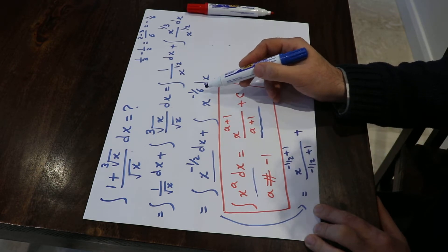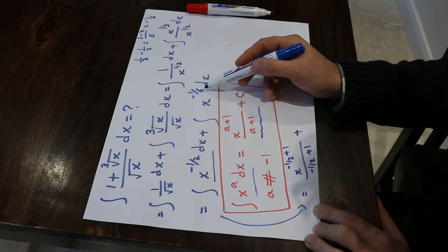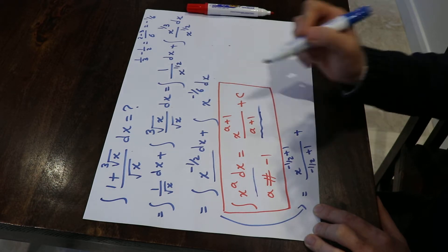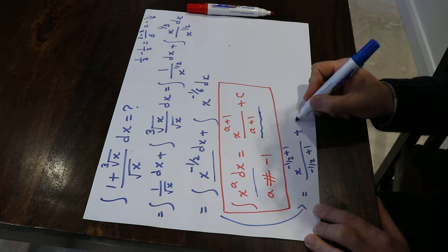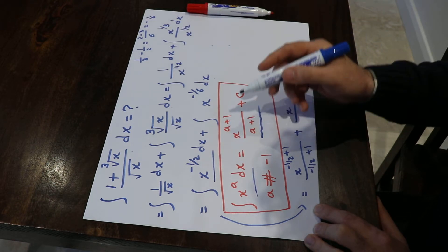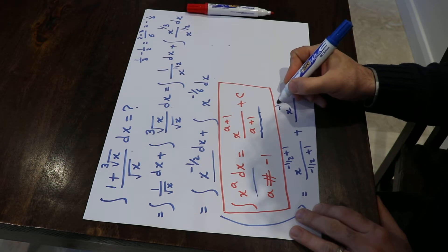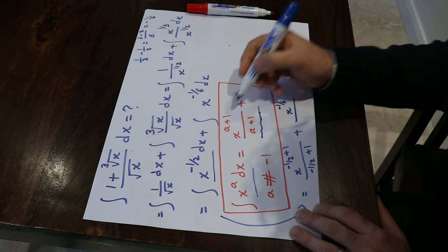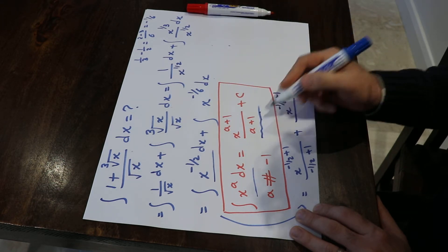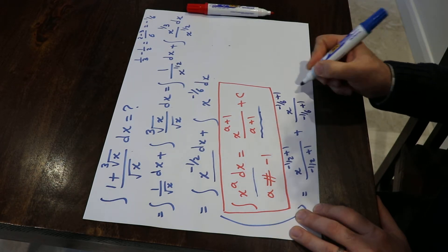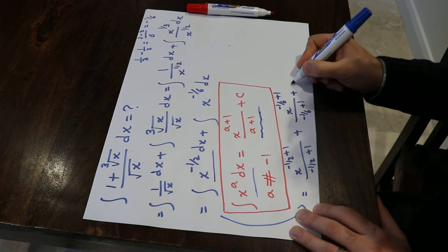In this case, a is equal to minus 1/6. Therefore, I can use this solution to solve my integral, which will be equal to x to the power of minus 1/6 plus 1, divided by minus 1/6 plus 1, plus the constant of the integral.